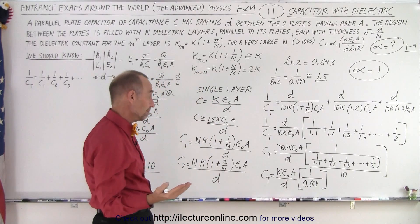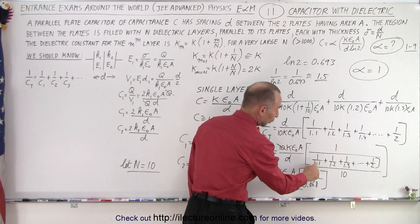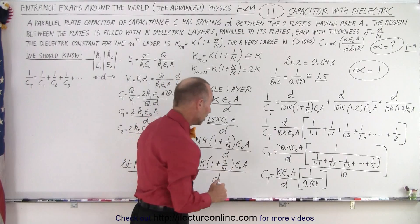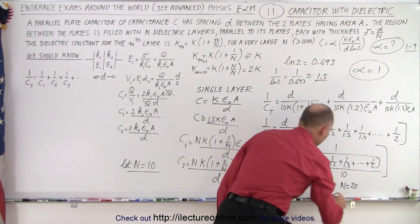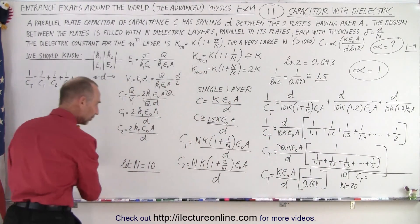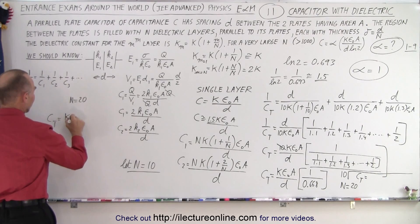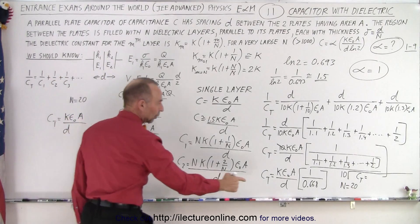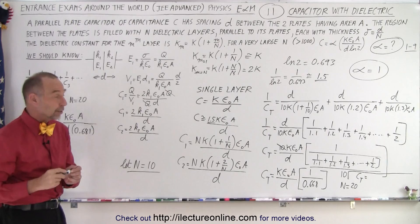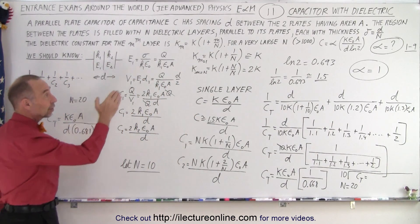The natural log of 2 is 0.693, and with N = 10 we got 0.668 — fairly close. Then trying N = 20, where the fractions run from 1/1.05, 1/1.1, 1/1.15, up through 1/2 with 20 terms total. Summing those, C_total = K·epsilon_0·A/d times 1/0.681, which is even closer to the natural log of 2.